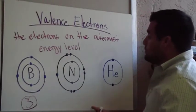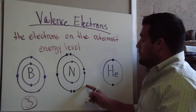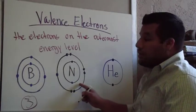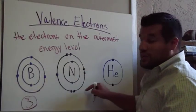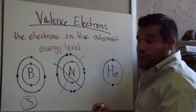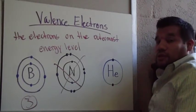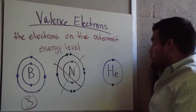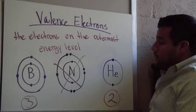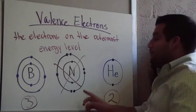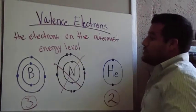Let's go to nitrogen. Actually, I think I drew nitrogen wrong, so we're going to hold off on nitrogen and just go to helium. How many electrons are on the outermost energy level? This one's pretty easy since helium only has one energy level. You should have said two. Sorry about that mix-up — I don't want to show you anything wrong, so we're going to skip over nitrogen since I drew it up there wrong.